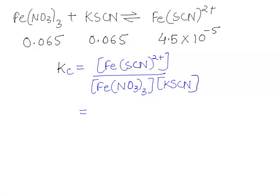Now let us substitute the values here, which will be 4.5 multiplied by 10 to the power minus 5 divided by 0.065 multiplied by 0.065.